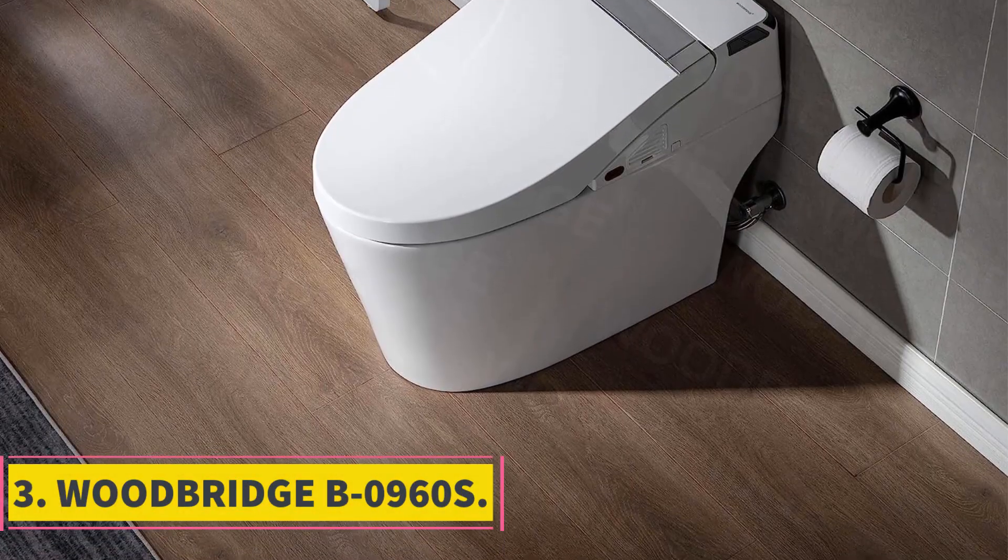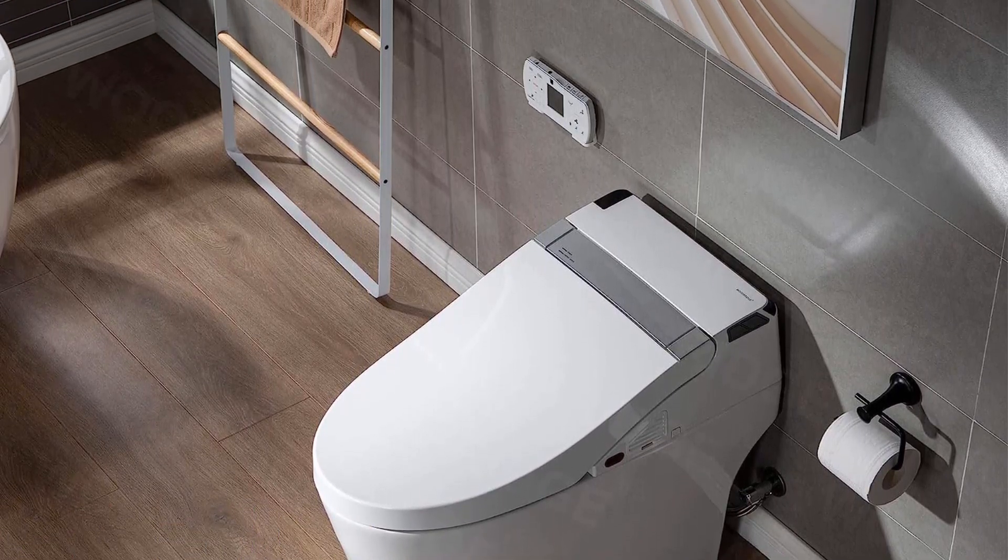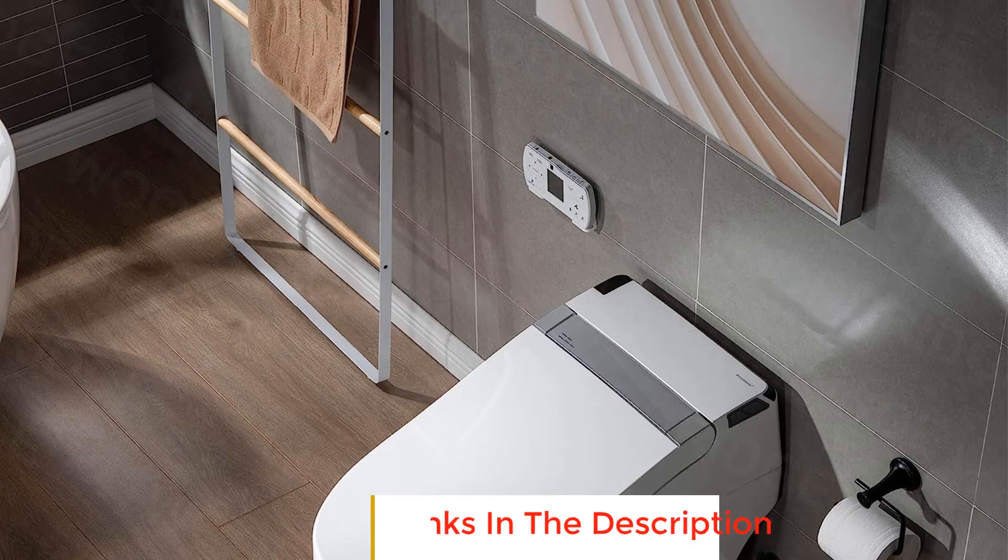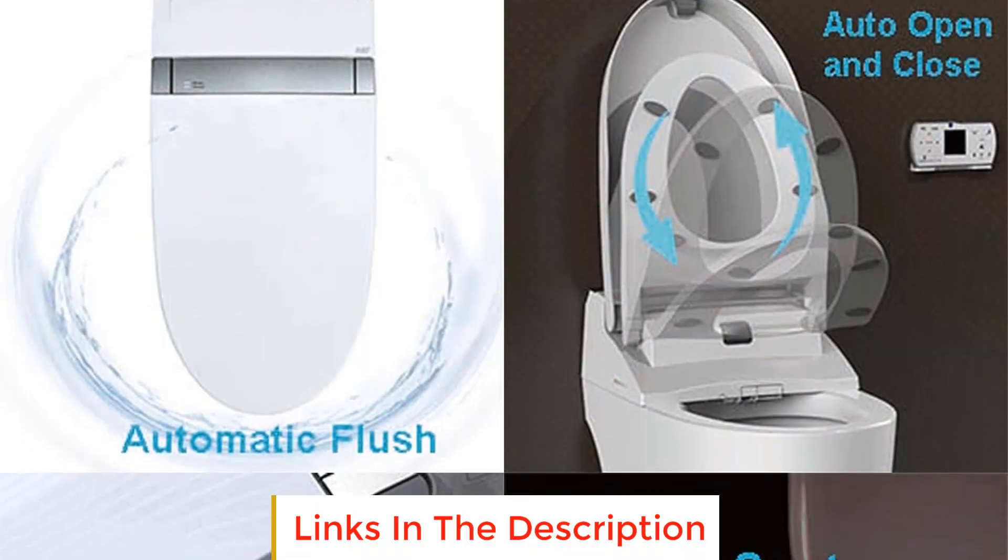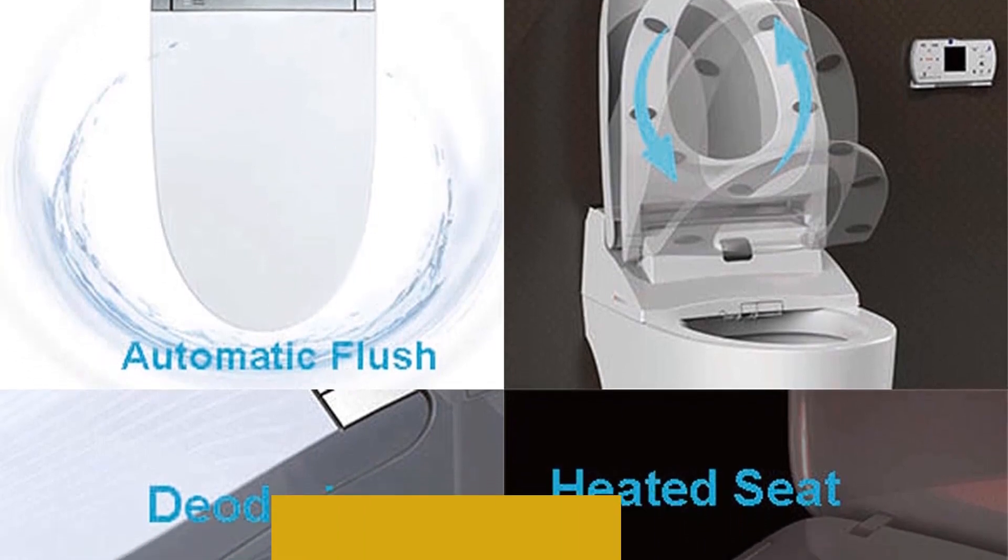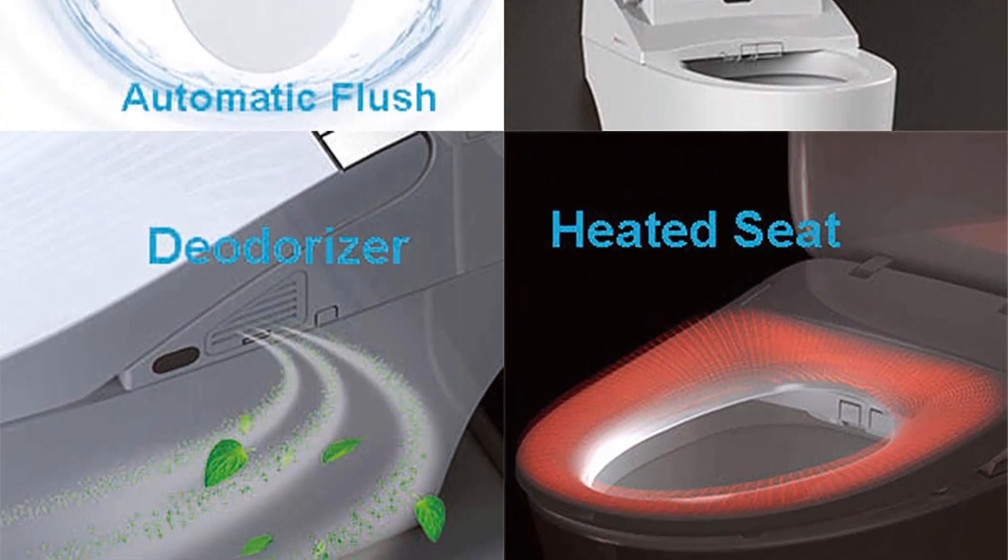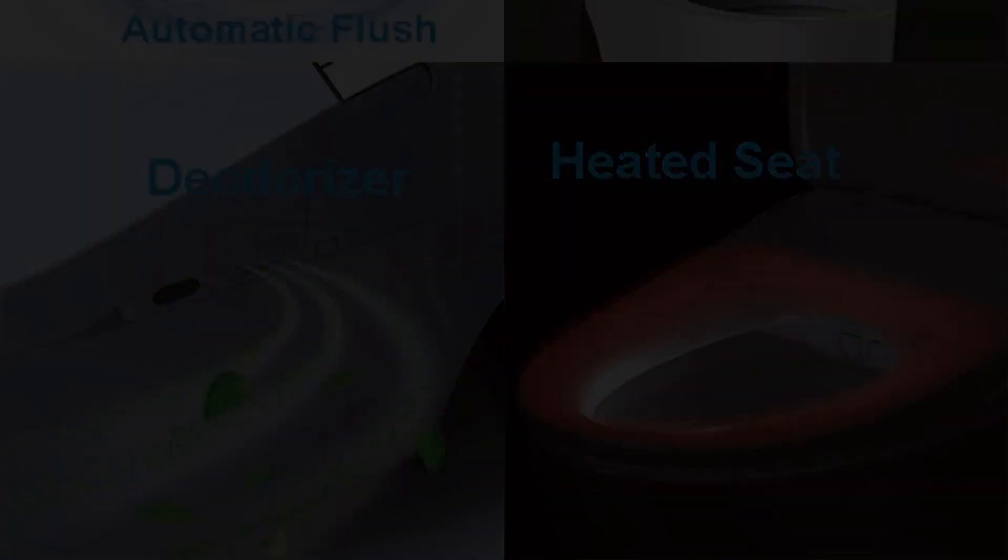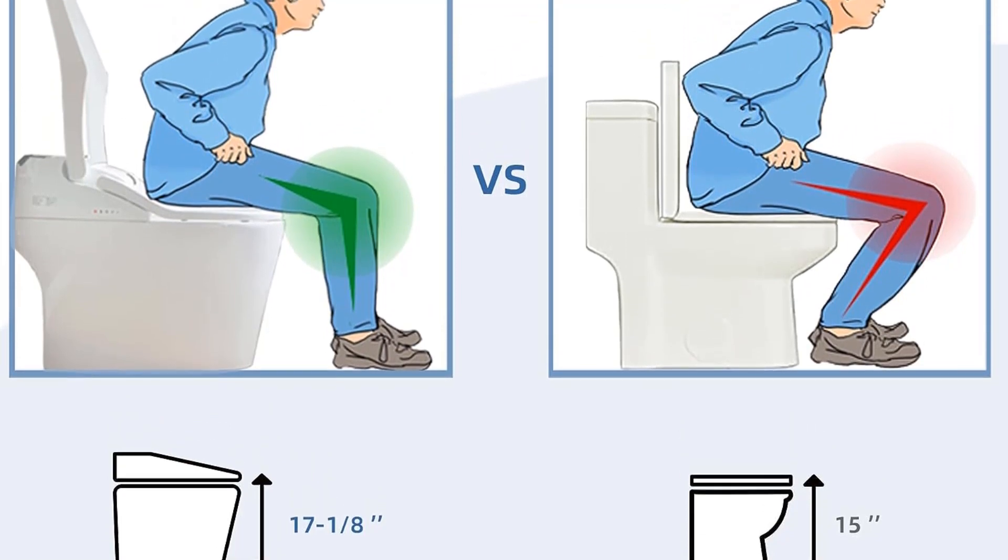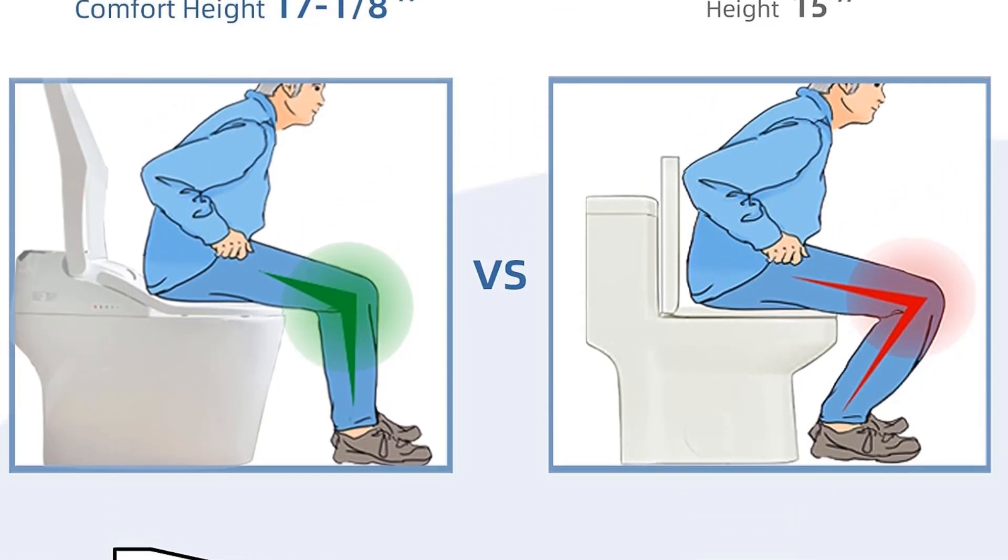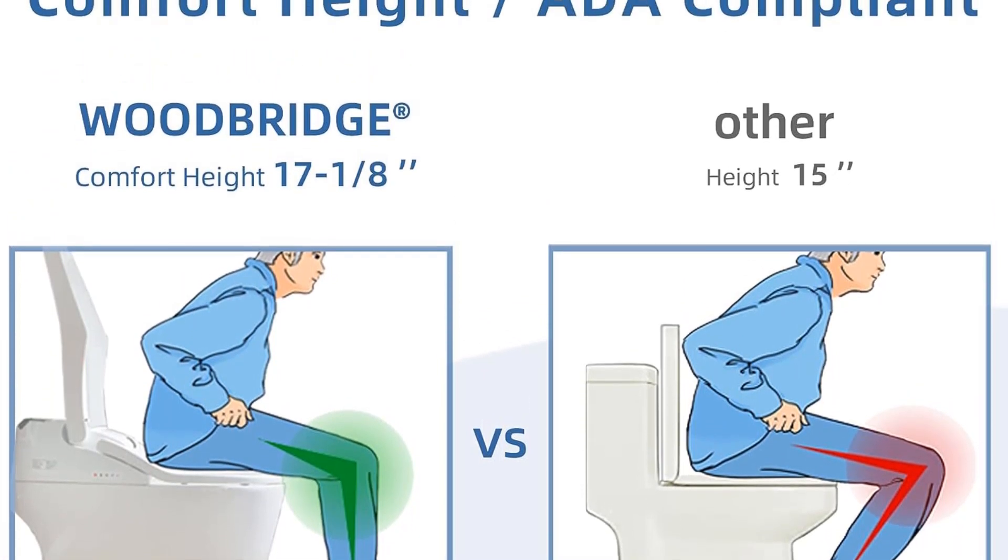Number 3. Woodbridge B0960S. The Woodbridge B0960S is an ADA-compliant toilet designed to provide a comfortable and hygienic experience for users. Its main features include a comfortable seating height of 17 1/8 inches from floor to seat, which reduces strain while sitting on or standing up from the toilet. Hygiene is emphasized with multiple washing options, including posterior wash, feminine wash, and pulsating wash,